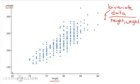Each blue point represents a person. For example, this person has a height of 75 and a weight around 170.